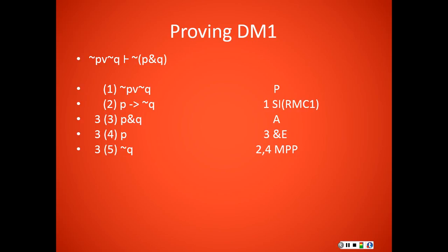And now that I have not Q, I see that I'm pretty close to being in a position to get a contradiction. What I need to do now is go ahead and put Q on a line by itself by applying and elimination to line 3. And then applying and introduction to lines 5 and 6 gives me Q and not Q, which is a contradiction. So that's good.